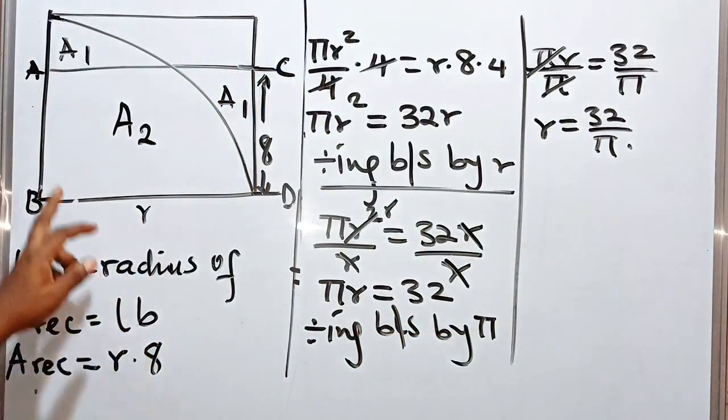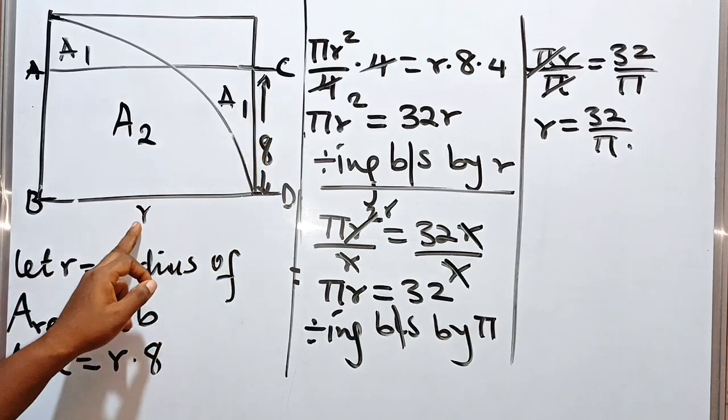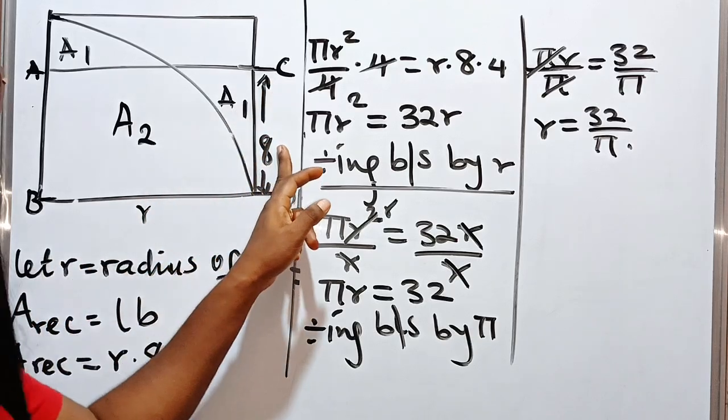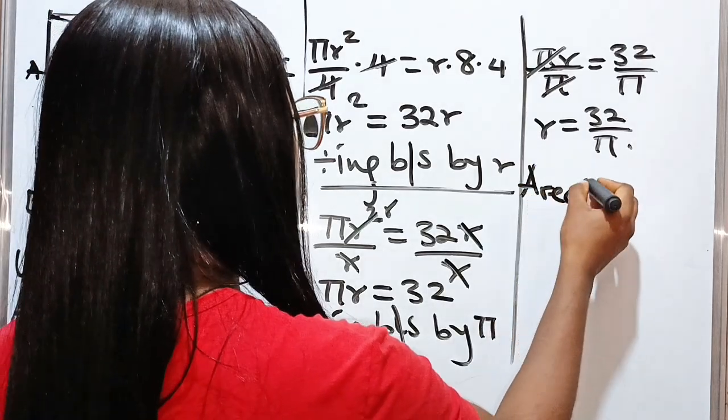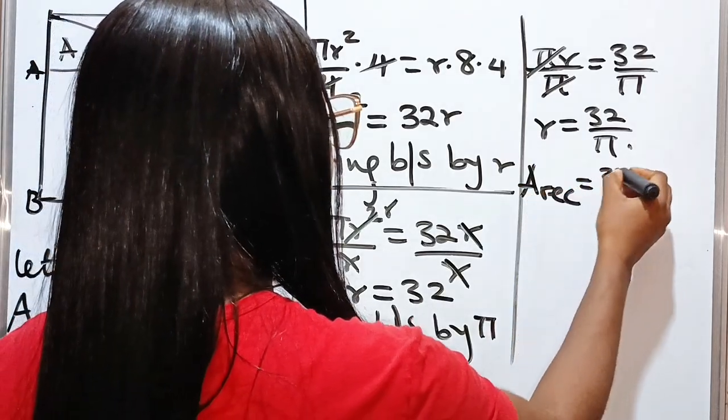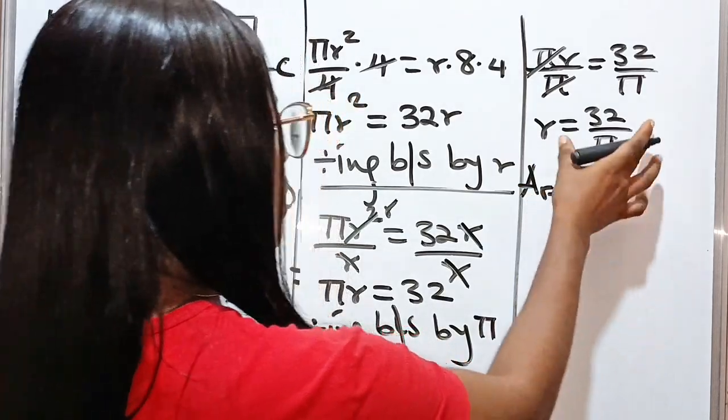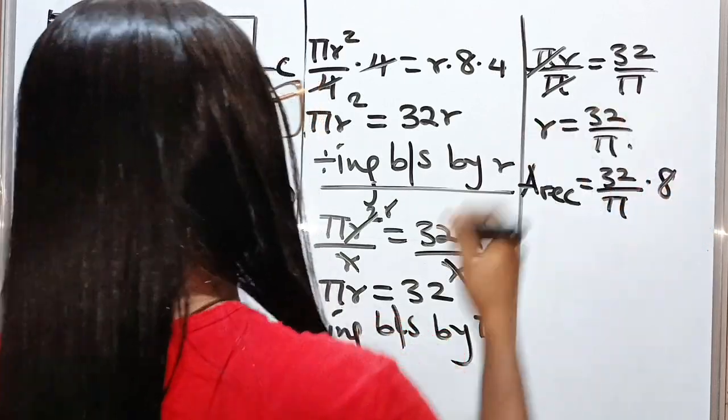Now, remember that the area of the rectangle is r multiplied by 8. So it means that the area of the rectangle is 32 over pi, which is our r, multiplied by 8.